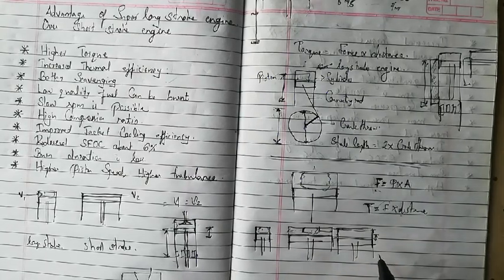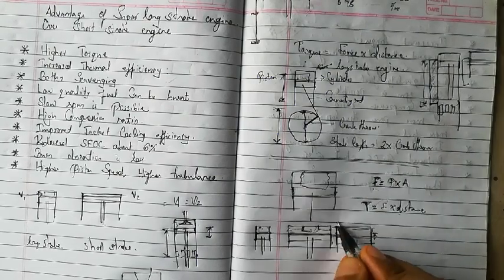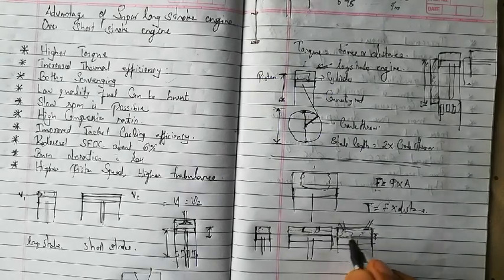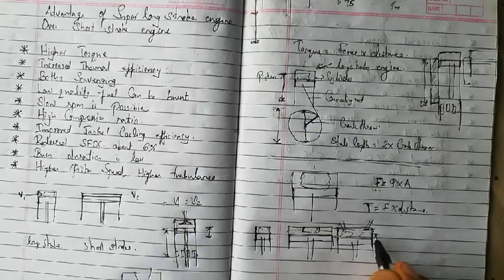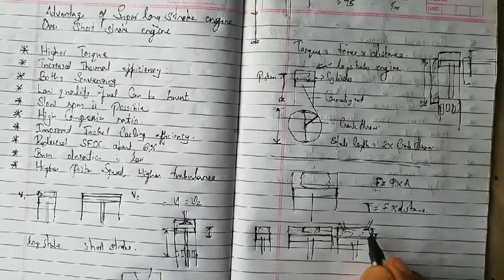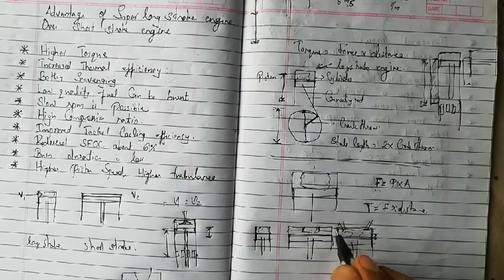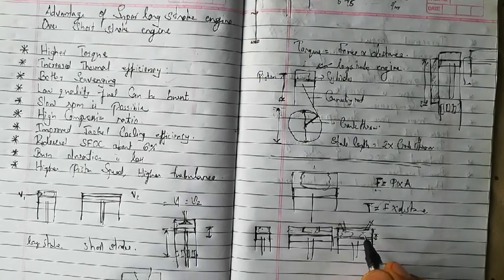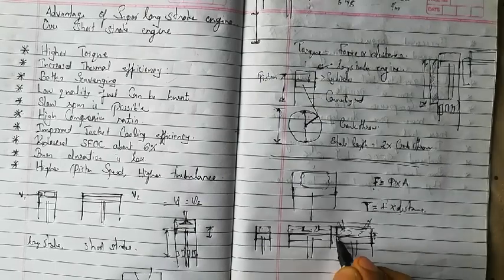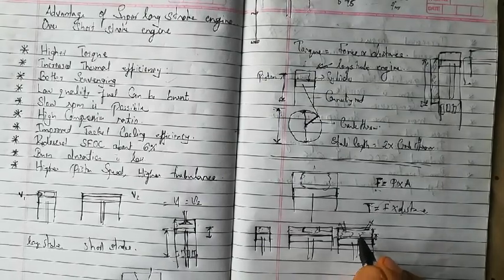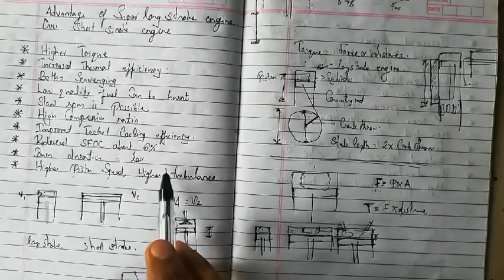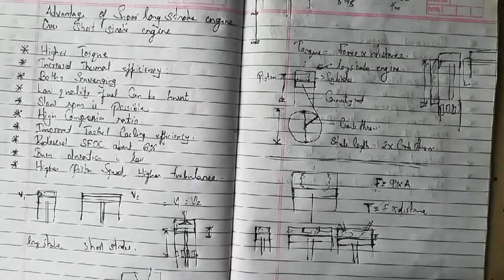That is why modern short stroke engines use multiple fuel injectors. With one injector on each side, explosions happen simultaneously at multiple points, filling the combustion chamber instantly without wasting time expanding the fire sideways. This way, all the energy produced by combustion is used to push the piston downward, making it more efficient. This is related to the burn duration advantage of long stroke engines.